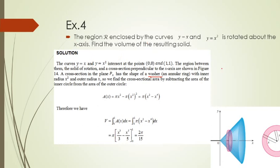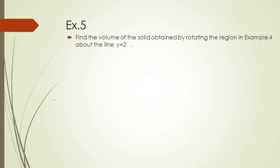Now we will check one more example. We use the same region as Example 4 but change the rotating axis. Example 5: find the volume of the solid obtained by rotating the region in Example 4 about the line y equals 2.